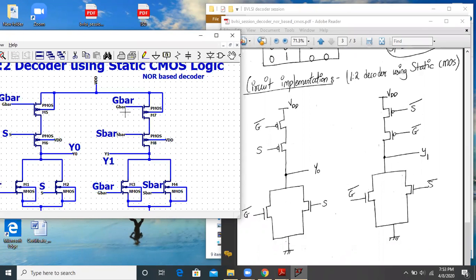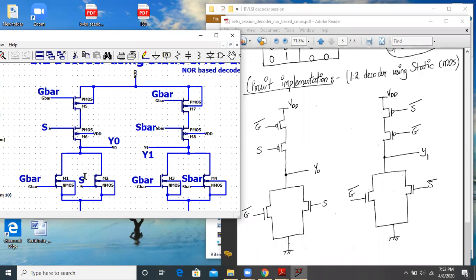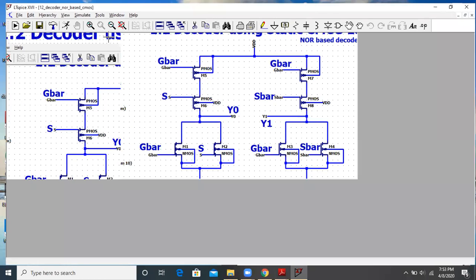As you can see, you have your G-bar S, G-bar S for Y0, and for Y1, you have inputs as G-bar and S-bar. So exactly this is the transistor level implementation of 1:2 decoder just now we have referred. Now let us go ahead and check the output.